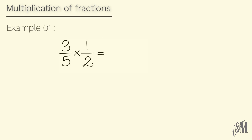Look at this example: 3 over 5 multiplied by 1 over 2. First we multiply the numerators — 3 into 1 is 3. Then we multiply the denominators — 5 into 2 is 10. So our answer becomes 3 over 10.